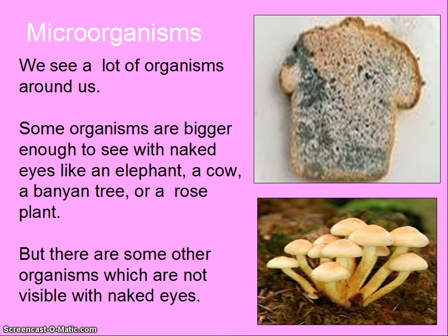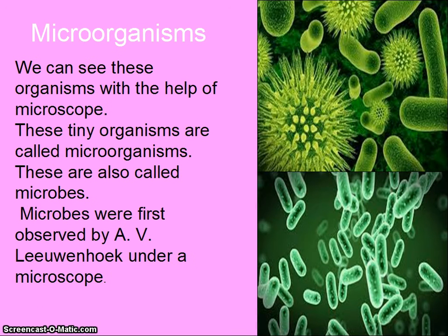We see a lot of organisms around us. Some organisms are big enough to see with naked eyes, like an elephant, a cow, a banyan tree or a rose plant. But there are some other organisms which are not visible with naked eyes. We can see these organisms with the help of a microscope. These tiny organisms are called microorganisms, and they are also called microbes.